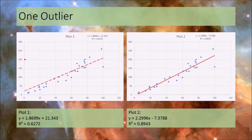The first example is univariate — one variable plotted against a Y, so an X and Y, modeling your dependent against your independent. You can see on the chart on the left there is an outlier colored red. The beta coefficient — the slope of X in relationship to Y — is 1.8699. In plot two, with the outlier removed, the slope coefficient changes to 2.2996.